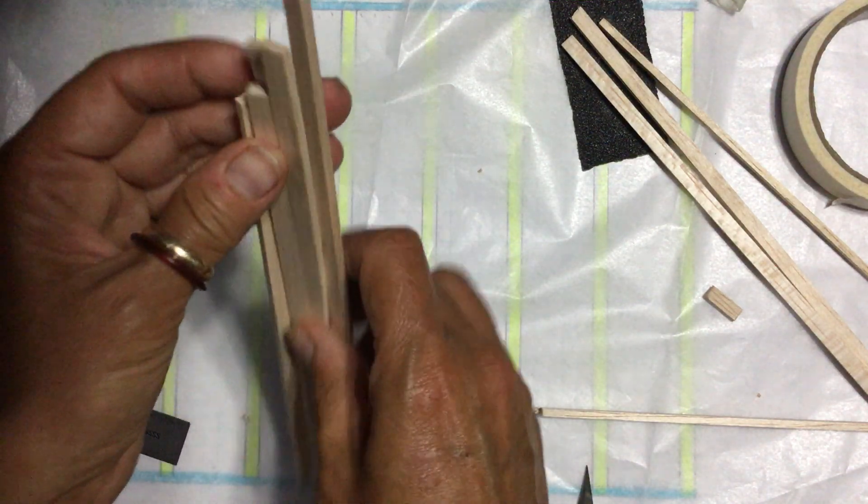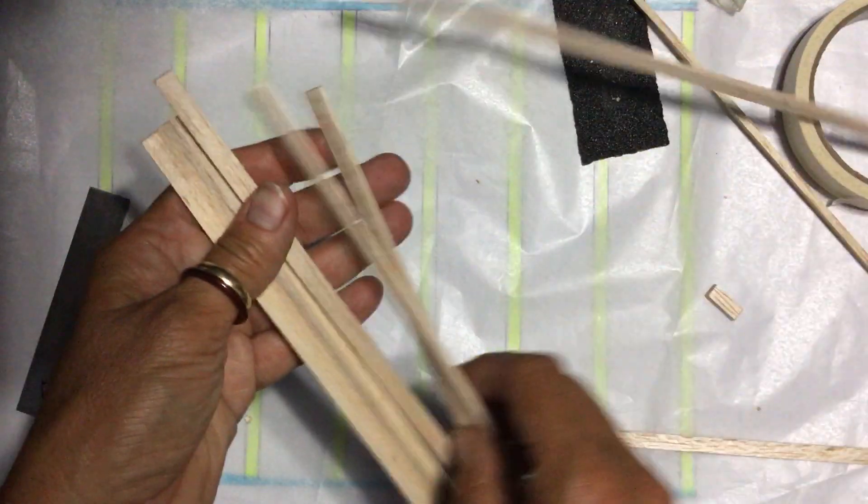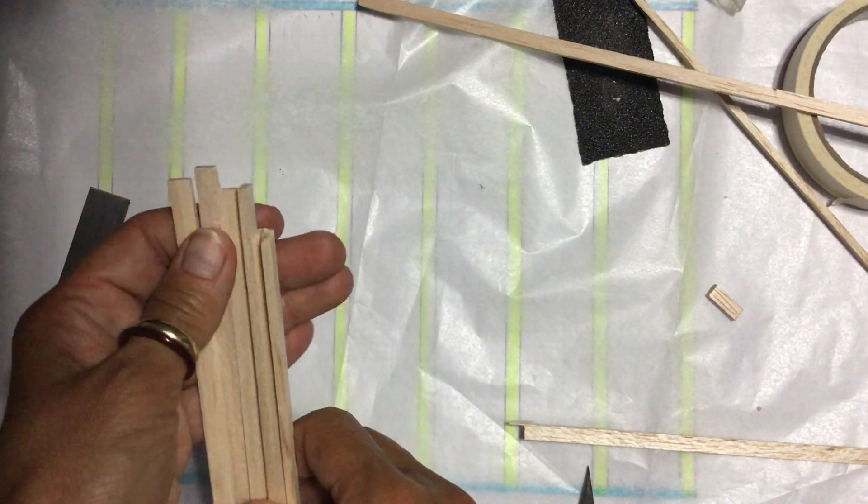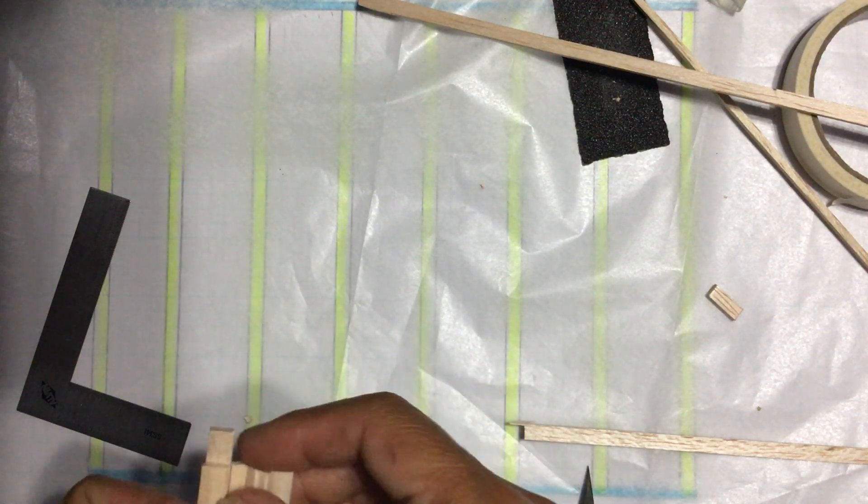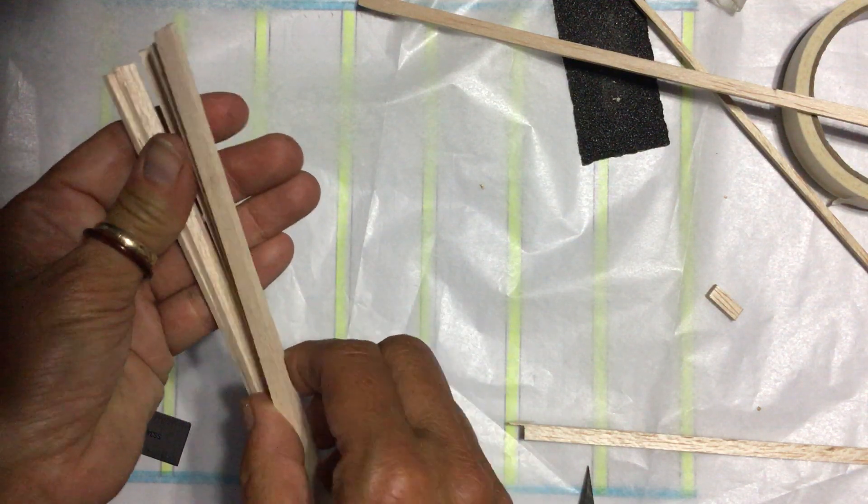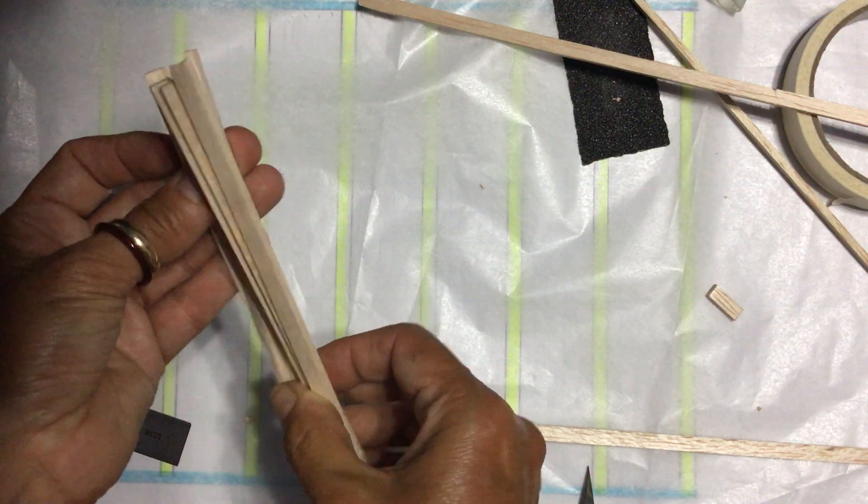And then I'm going to take my eight pieces that I have and make sure that they are all the same size. So I'm going to line them up. Okay, they are not. Then I'm going to do a quick sand on the long ones. Okay, maybe I could just do a couple at a time instead of all eight.